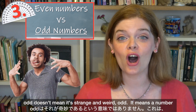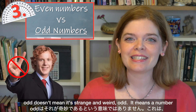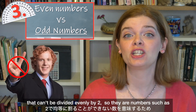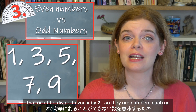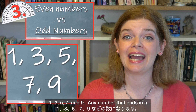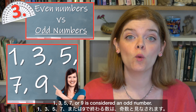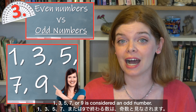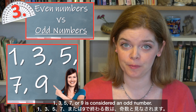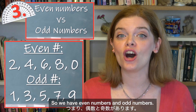The opposite of an even number is an odd number. In this case, odd doesn't mean strange and weird odd — it means a number that can't be divided evenly by 2. So they are numbers such as 1, 3, 5, 7, and 9. Any number that ends in a 1, 3, 5, 7, or 9 is considered an odd number. So we have even numbers and odd numbers.